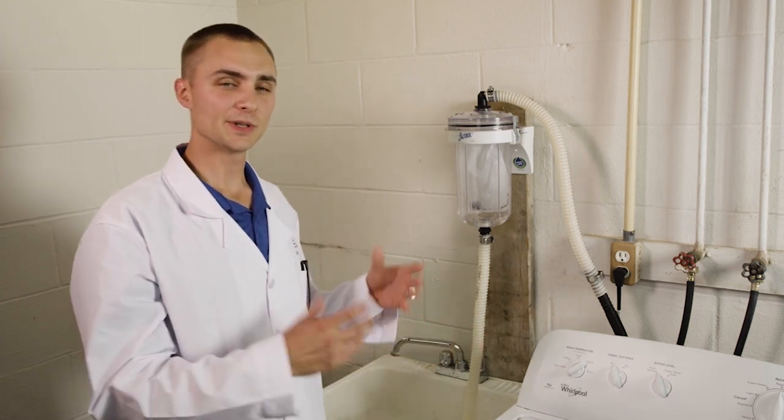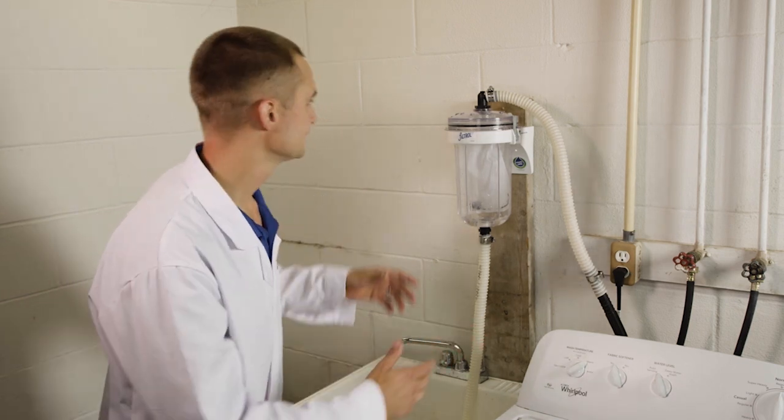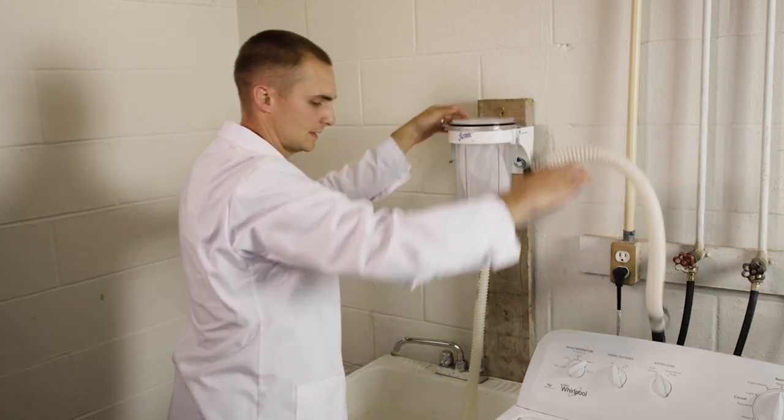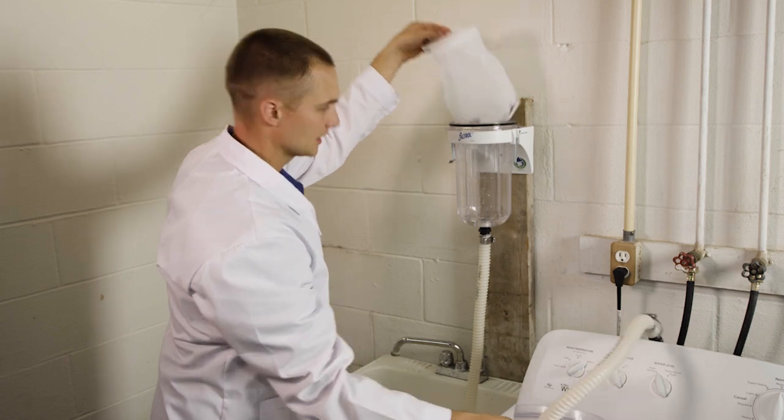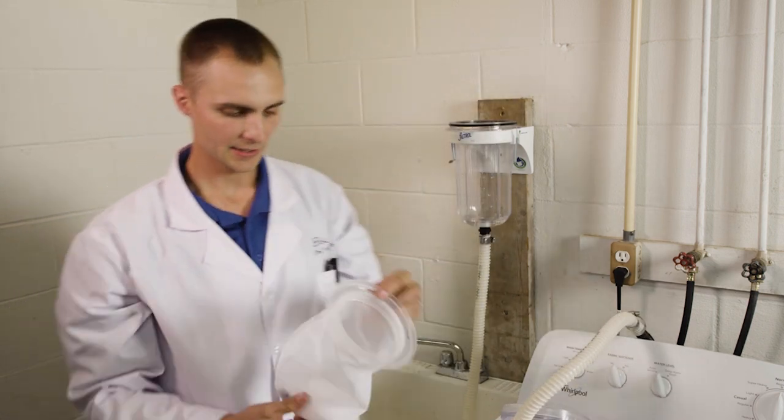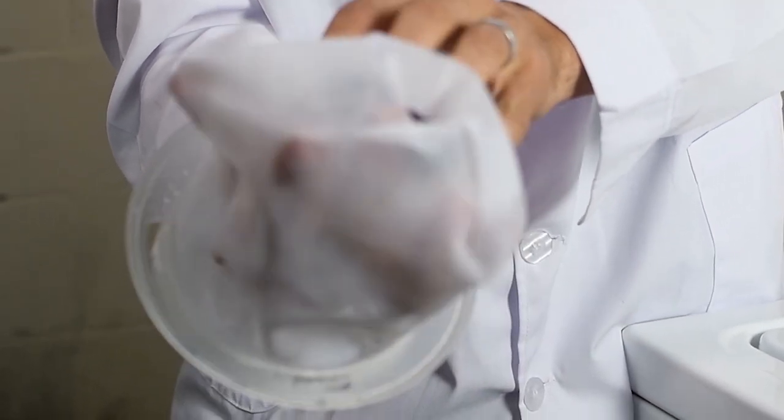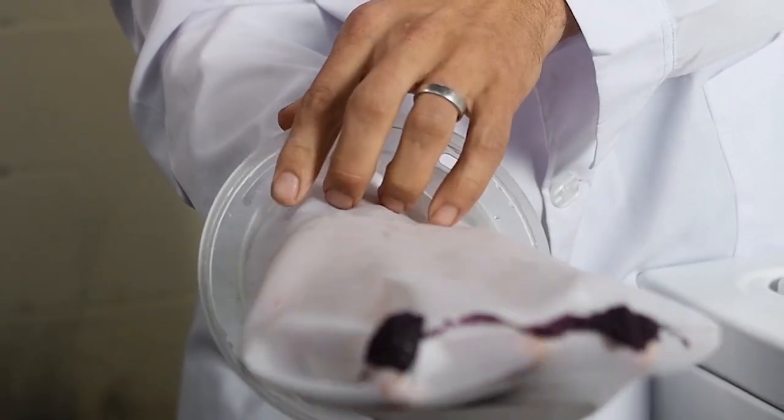Now that we've shown you how the Filtral works, we're going to take off the lid, pull out the filter and show you exactly what it caught. Remove the clips, remove the lid. Pull out our 100 micron reusable poly filter and you can see all the tiny microfibers it caught from just one wash of that fleece blanket.